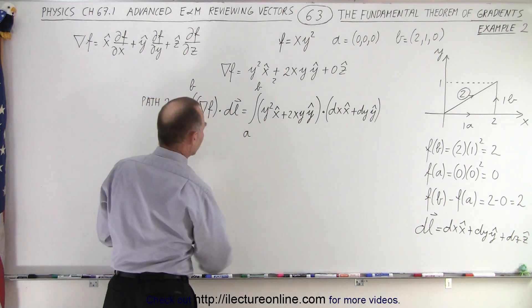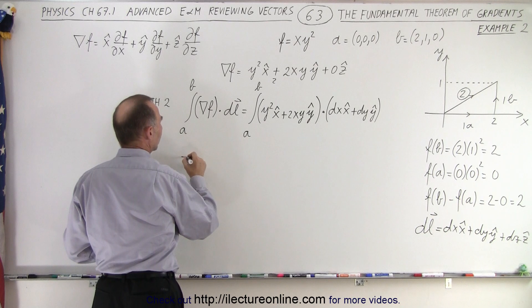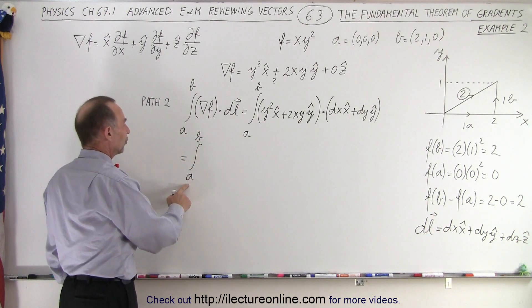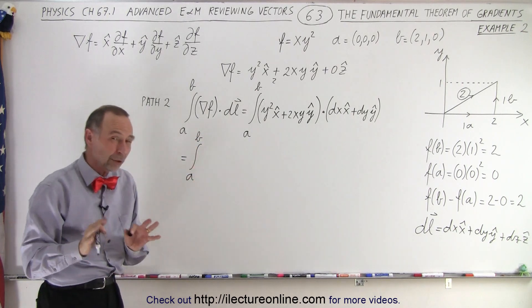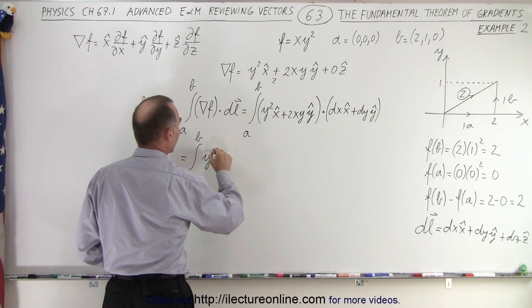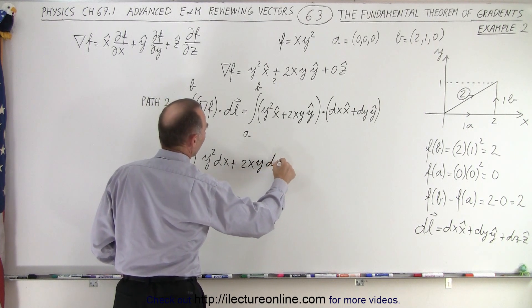So when we take the dot product we only get the x and y components that survive, so this would be equal to the integral from a to b. When we multiply we get y squared times dx plus 2xy times dy.